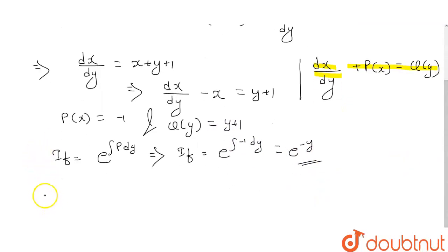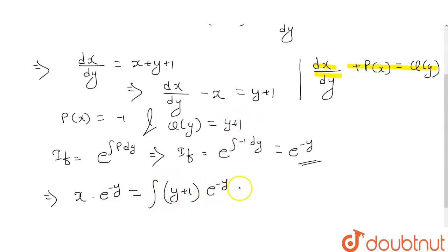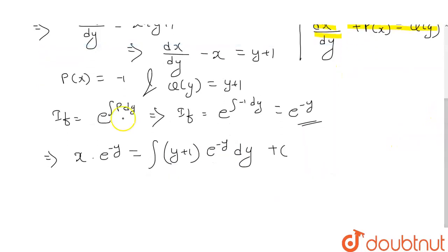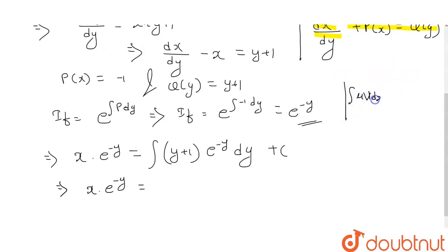Now the solution for this linear differential equation is x multiplied by the integrating factor e^(−y), equal to the integral of Q(y) times the integrating factor plus c. We need to solve x·e^(−y) = integral of (y + 1)·e^(−y) dy. There are two functions, (y + 1) and e^(−y), so we solve by integration by parts. The formula is: integral of u·v dx = u·(integral of v dx) minus integral of (u', integral of v dx) dx.